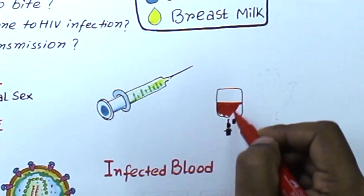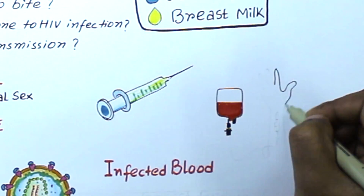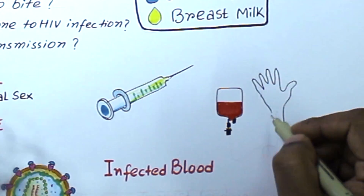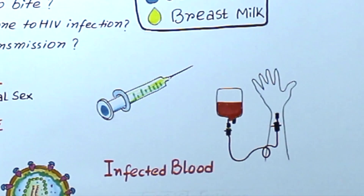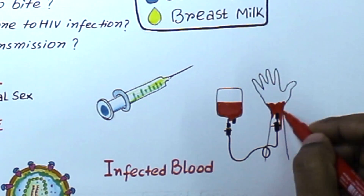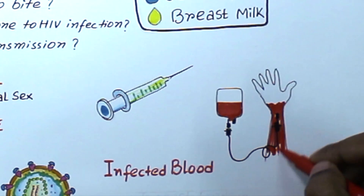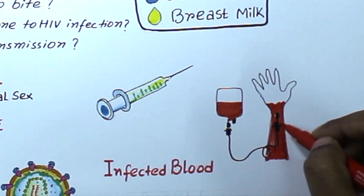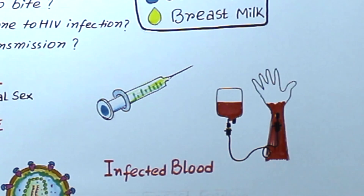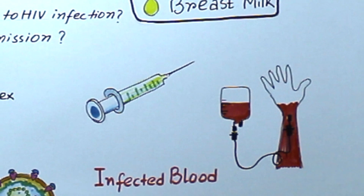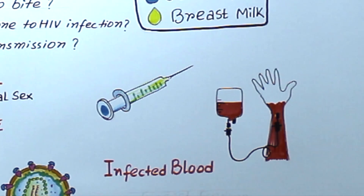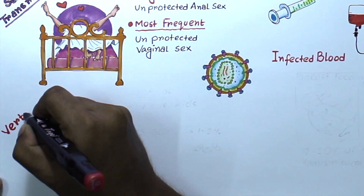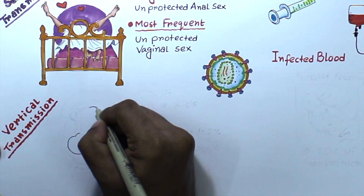Transfusion of whole blood, packed red blood cells, platelets, leukocytes, and plasma are all potential carriers of HIV infection. In contrast, hyper-immune gamma globulin, hepatitis B vaccine, and Rh immunoglobulin do not carry HIV, because the procedures involved in processing these products either inactivate or remove the virus.